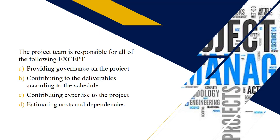Next question: the project team is responsible for all the following except which one? Hopefully you selected A — providing governance on the project is the responsibility of the project management office, the PMO, not the project management team. The project team is responsible for contributing their expertise, contributing deliverables according to the project schedule, and estimating task durations, costs, and dependencies. That is the distinction between the project team's responsibilities and those of the PMO.